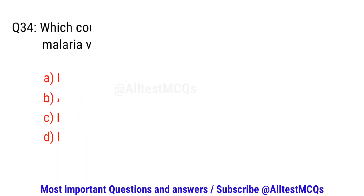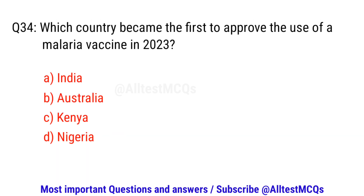Question number thirty-four. Which country became the first to approve the use of a malaria vaccine in 2023? The right option is C. Kenya.